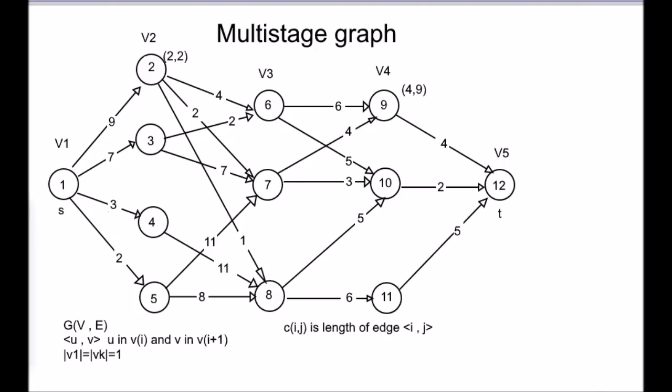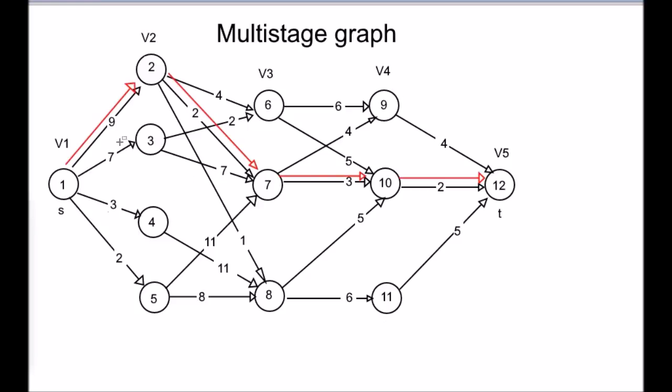The solution for this given graph is here. The value of the path is 9 plus 2 plus 3 plus 2. And the path is 1 to 2, 2 to 7, 7 to 10, and 10 to 12. How to find this path?